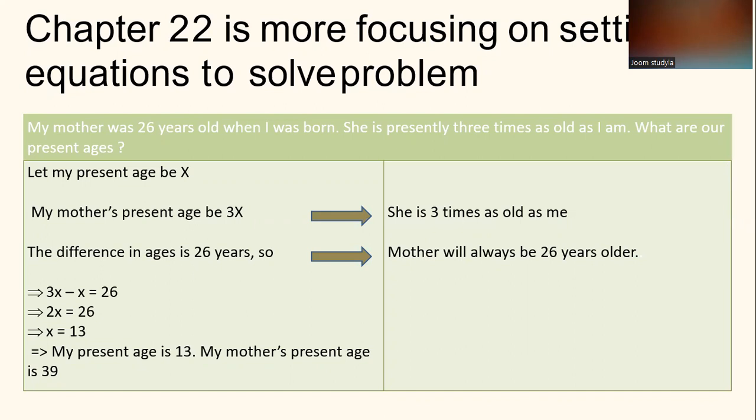In this case, let my present age be X, which you don't know. You have to calculate it to find what is your age. My mother's present age is 3X. She is three times as old as me. The difference in ages is 26 years, so mother will always be 26 years older.